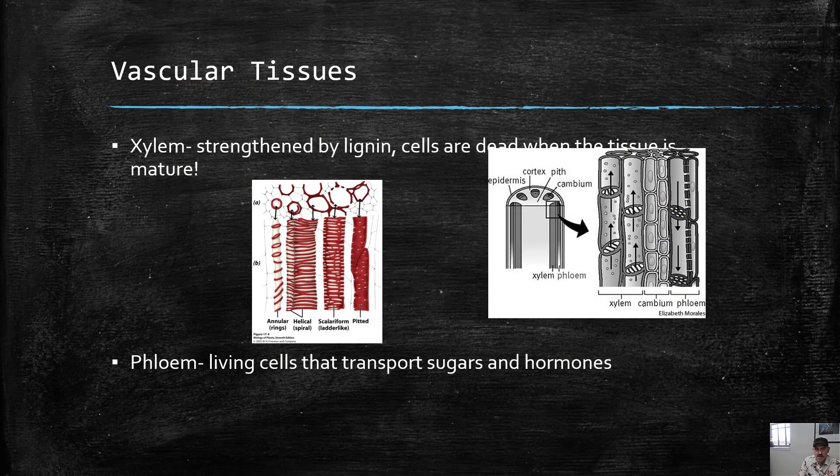So vascular tissue includes xylem, which are cells strengthened by lignin. You can see these spiral thickenings, these different kinds of wall thickenings. These are extra thick cell walls is what that red stuff is. And that gives them strength. They conduct water. They act like a big drinking straw. And phloem has thinner cells that are alive at maturity, unlike xylem. And they transport sugars and hormones.